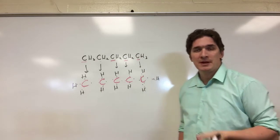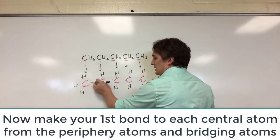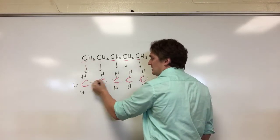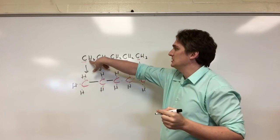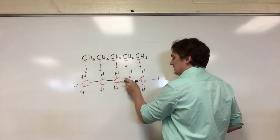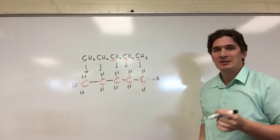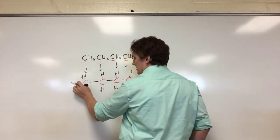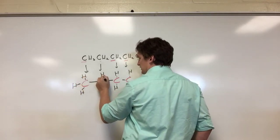We're going to start by doing connect the dots. Each bridging carbon — each atom in the backbone — has to be connected to the one beside it. So this carbon is connected to the two around it, and this carbon is connected to the two around it. We also have to form at least one bond to each peripheral atom, so we pair up, pair up, pair up.